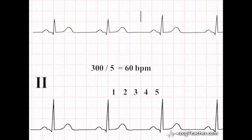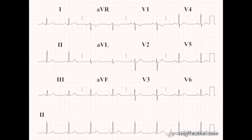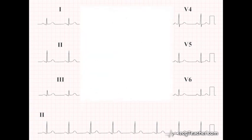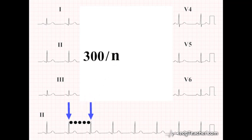Generalizing, we have found a simple method for calculating heart rate from an ECG. Identify 2 R waves on the rhythm strip. Count the number of large squares between them. Then, take this number and divide it into 300. Provided the heart rhythm is regular, this method gives you an accurate heart rate in beats per minute.